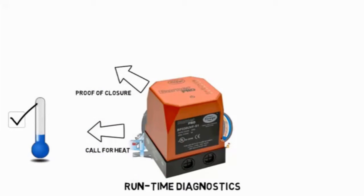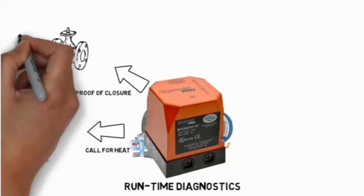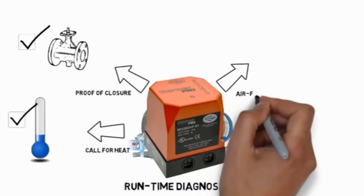Proof of valve closure checks for wiring problems or faulty fuel valves. Air flow proving cycle ensures a proper combustion environment.